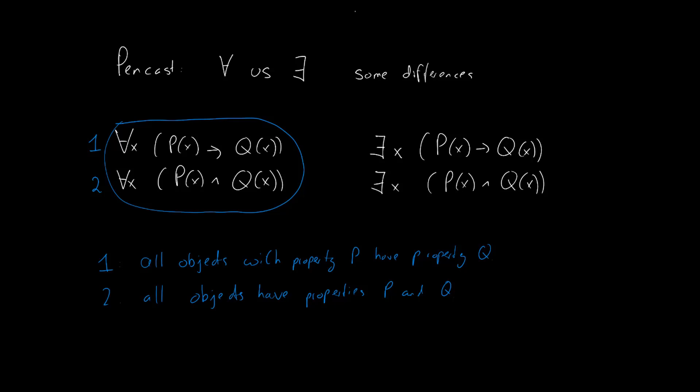In the first situation all objects that have property p must also have property q. But there could very well be objects that do not have property p. In the second case however we say that all objects in the whole universe must have both property p and property q.